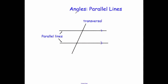In this video we're going to look at angles whenever there's parallel lines. Here we've got two parallel lines shown by the little arrows and we've got a transversal, a straight line that cuts them. As this transversal cuts the parallel lines, some of the angles are the same as each other, and we're going to look at the names of those angles.